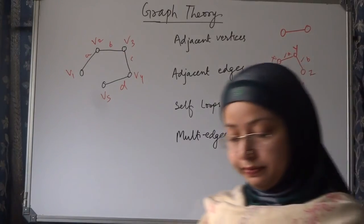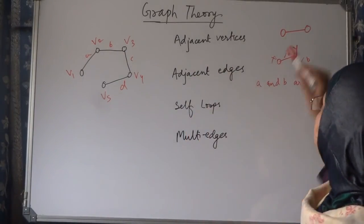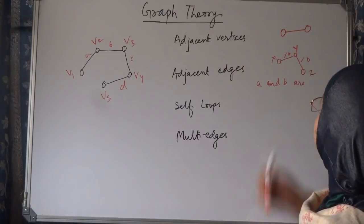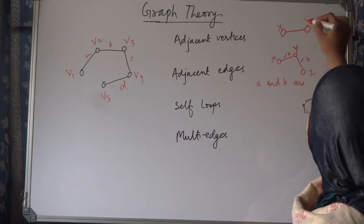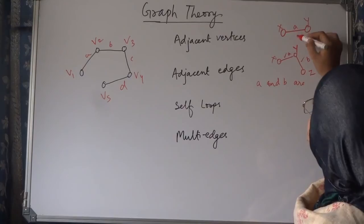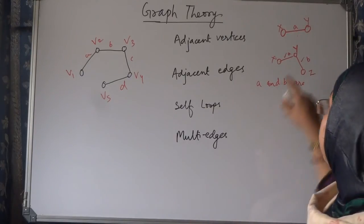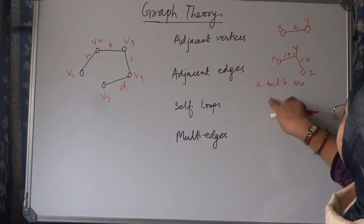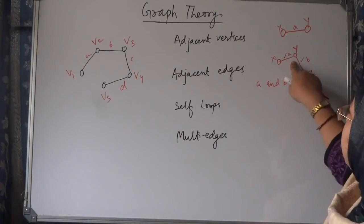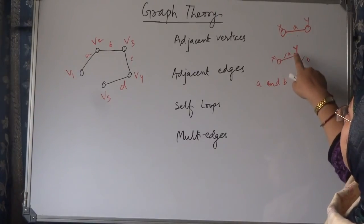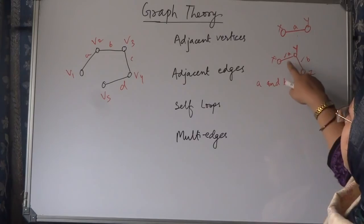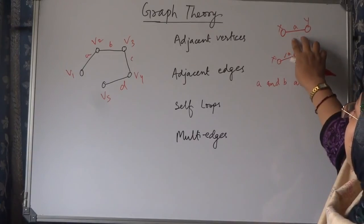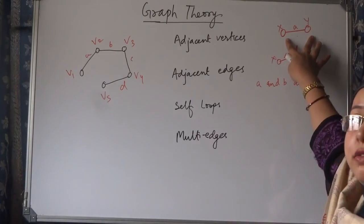Now, this is adjacent vertices—vertices x and y for edge a. So, what we say is that here, y is common between these two edges, is the connecting node between these adjacent edges. And here, a is the connecting edge between these two adjacent vertices.